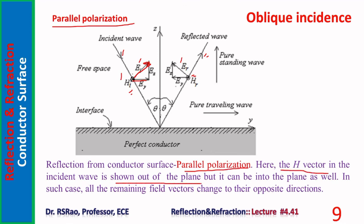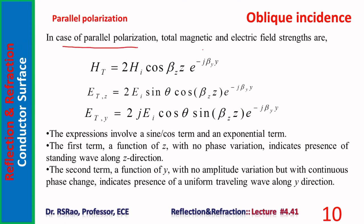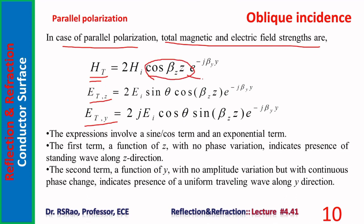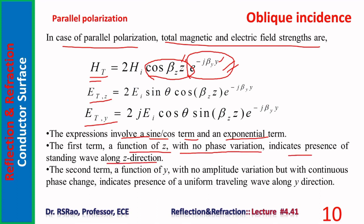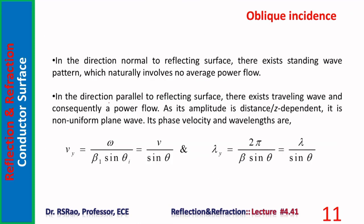For parallel polarization, the total magnetic field is H_t equals 2H_i cos(β_z · z) e^(-jβ_y · y), and the total electric field has z and y components. Here also there are two parts: the cosine term indicates a standing wave along z, and the exponential term indicates a traveling wave along the positive y direction. The expressions involve sine and cosine terms along with an exponential — the first term (function of z, no phase variation) indicates standing wave along z; the second term indicates a traveling wave.